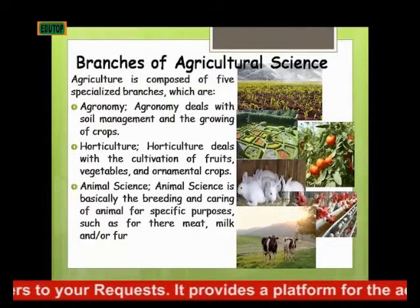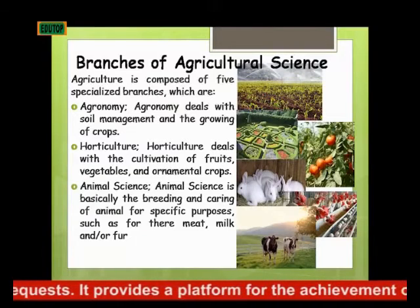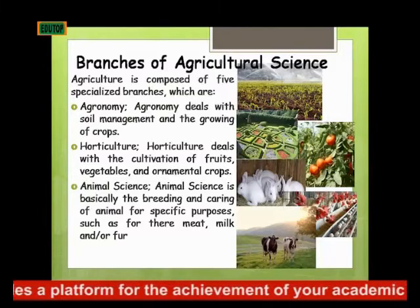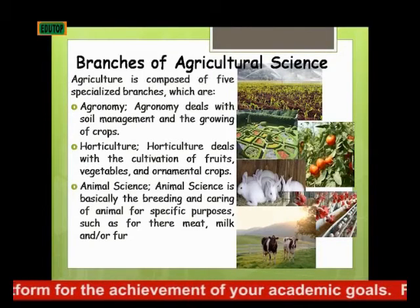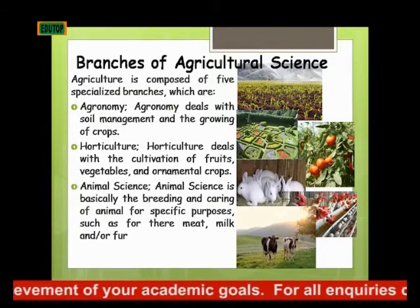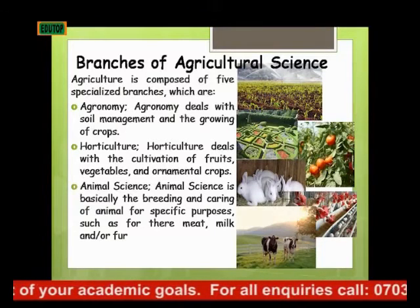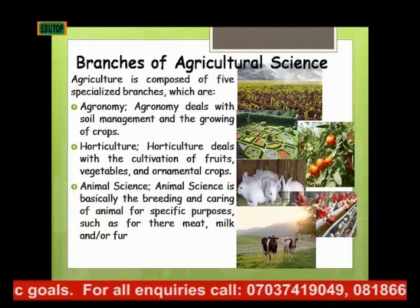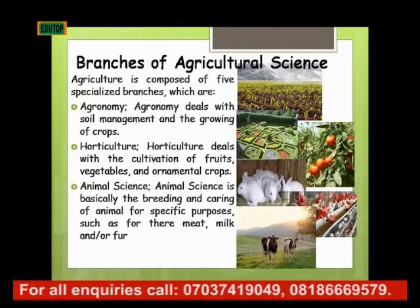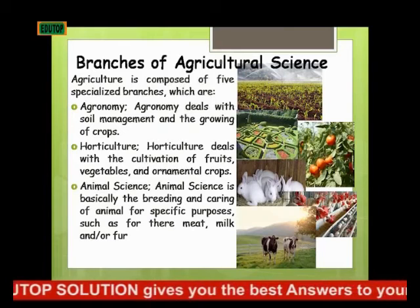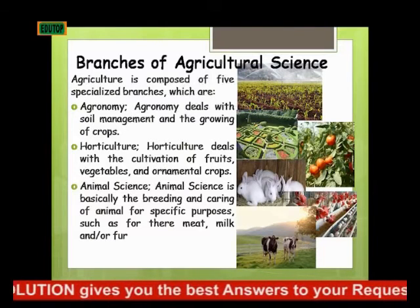Now, the branches of agricultural science. Agriculture has several major branches. Agronomy is the first one, and it deals with soil management and the growing of crops. Then we have horticulture, as we can see in the picture. Horticulture deals with the cultivation of fruits, vegetables, and ornamental crops.